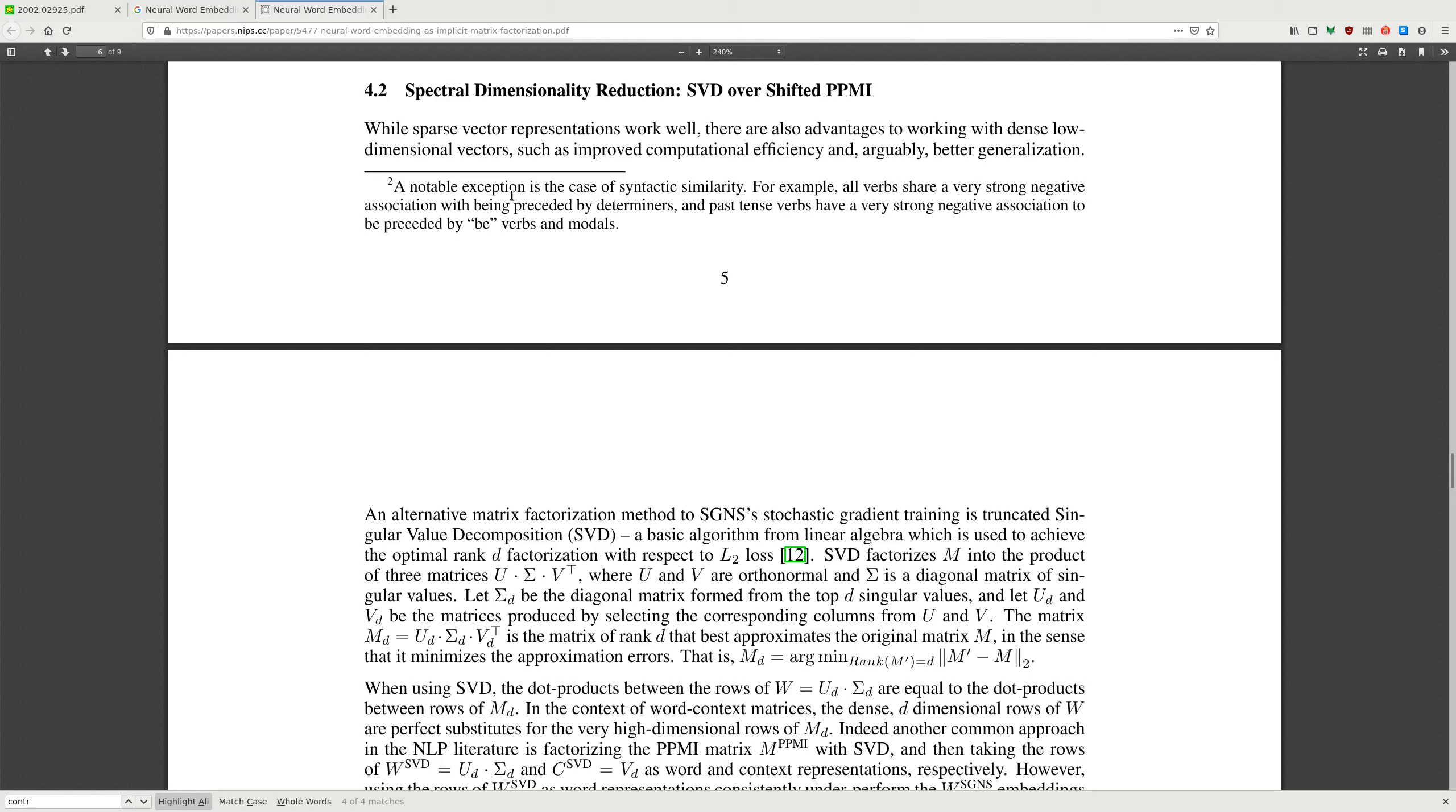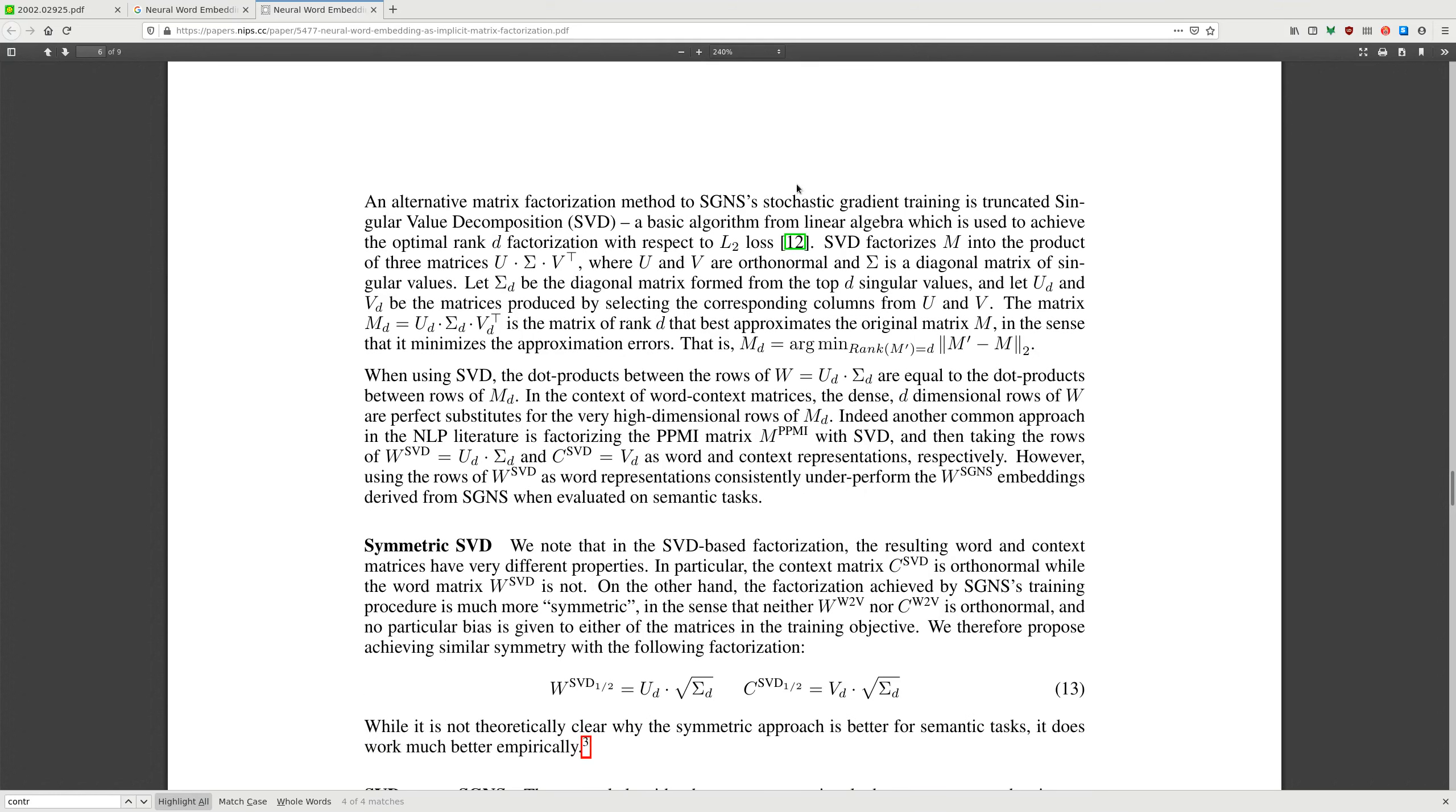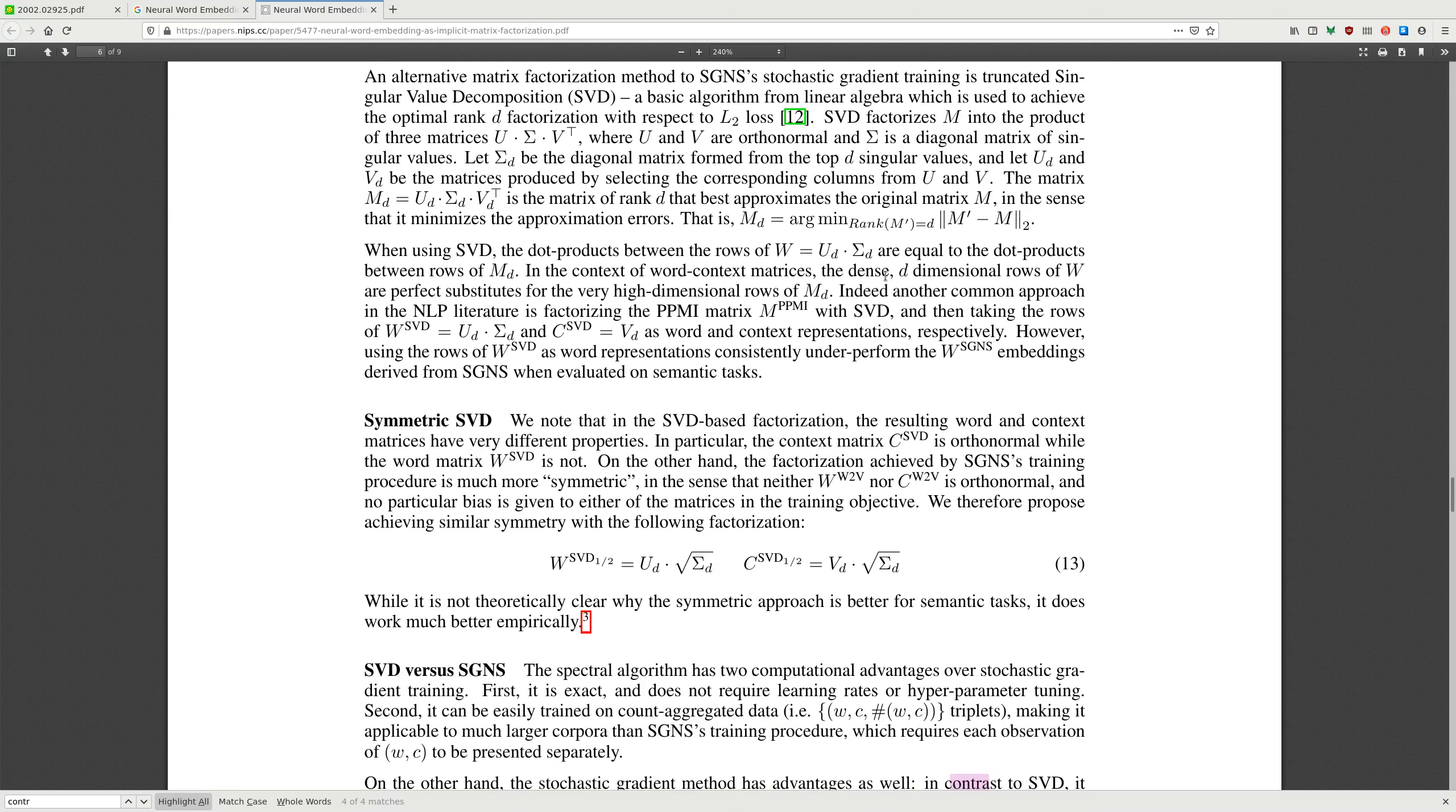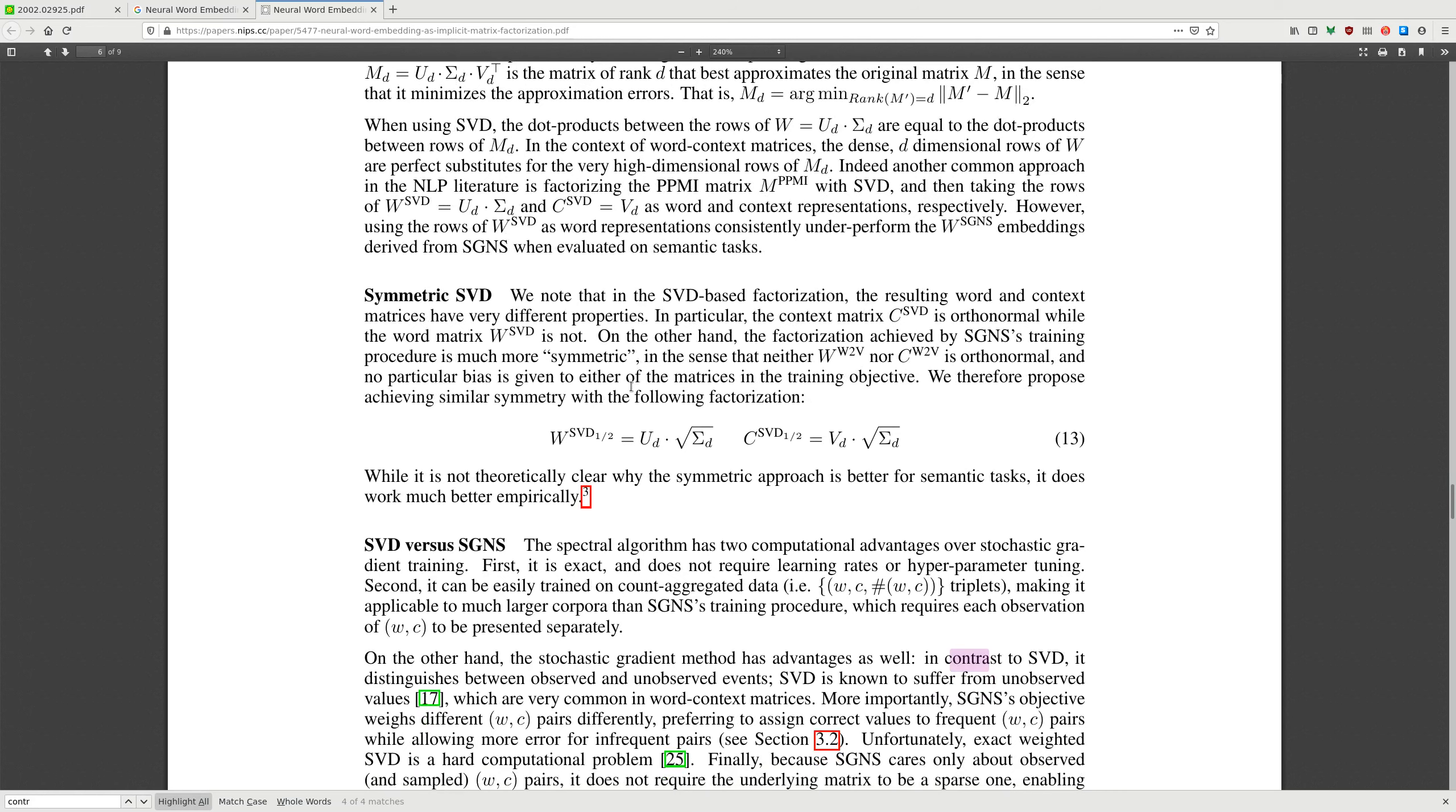Spectral dimensional reduction using shifted PPMI. While sparse vectors work well, there are also advantages to using low-density vectors. Stochastic gradient descent and singular value decomposition can be used to achieve optimal factorization. Indeed, another common approach in NLP literature is factorizing the PPMI matrix with SVD and then taking the rows and columns as word and context representations respectively. However, using the rows of SVD as word representation consistently underperforms SGNS meanings when evaluated on semantic tasks.